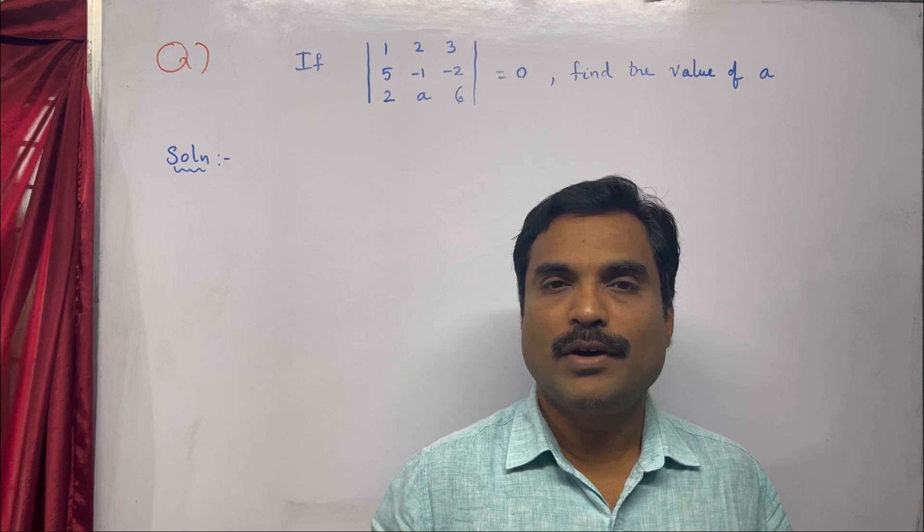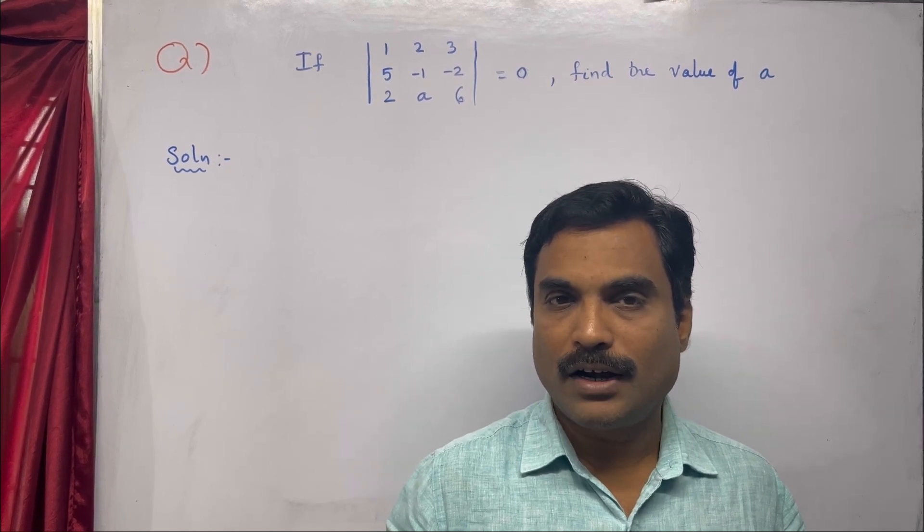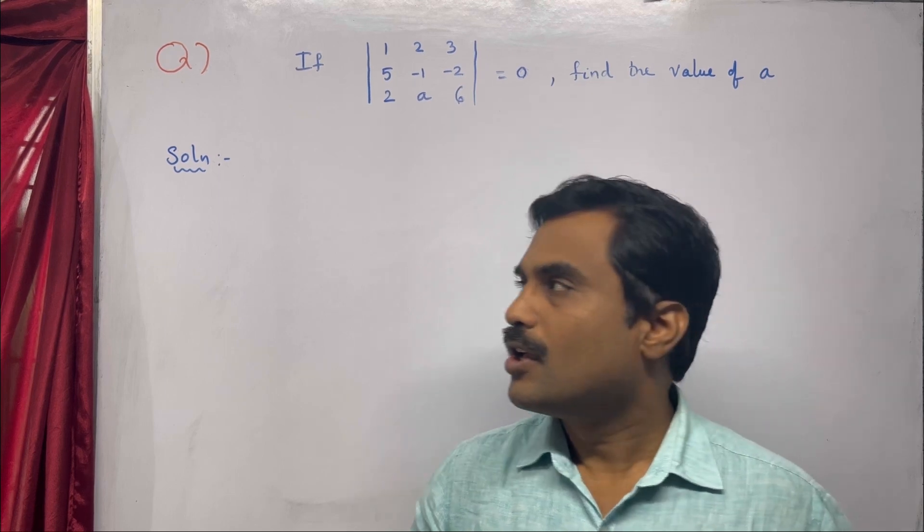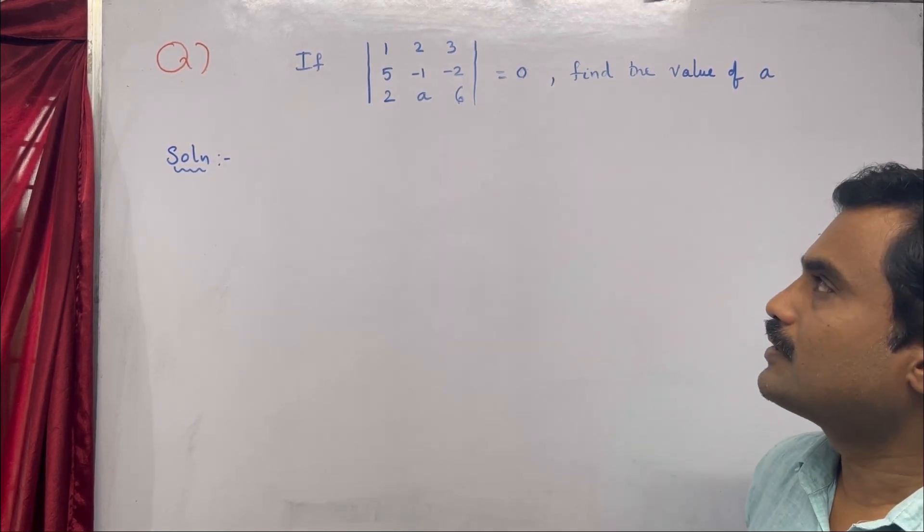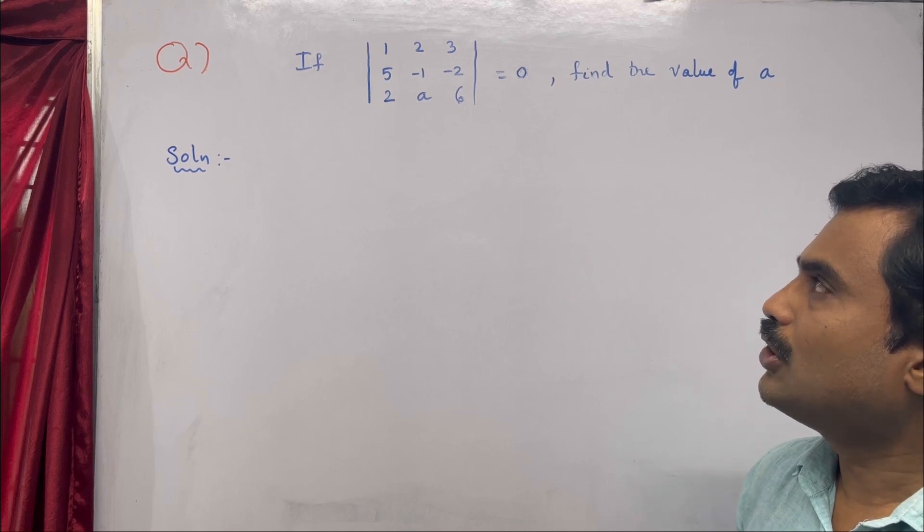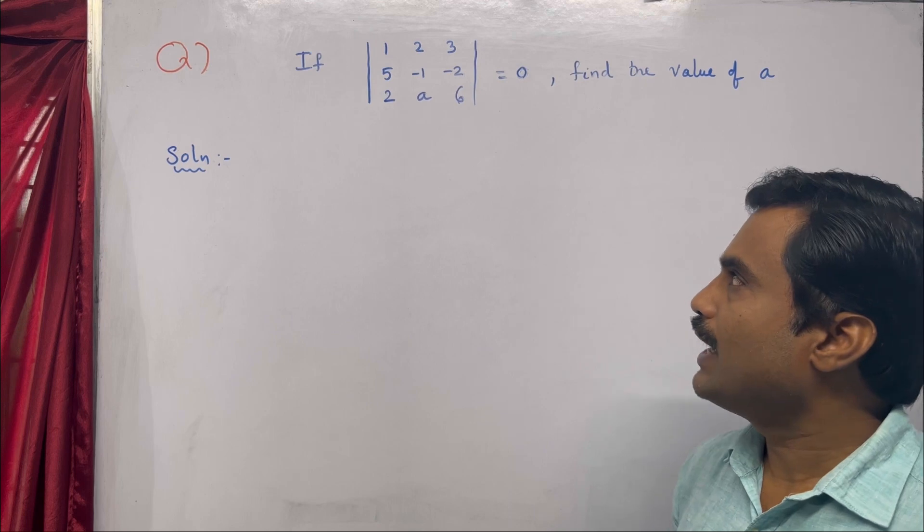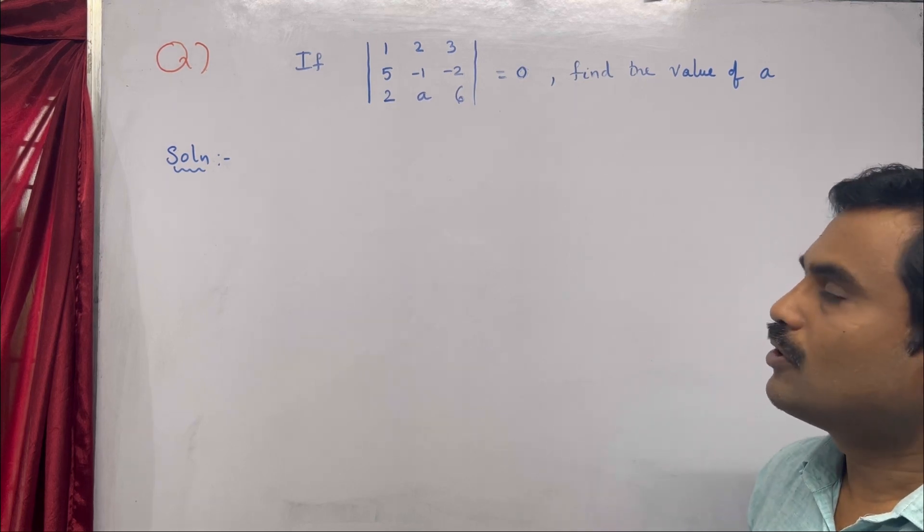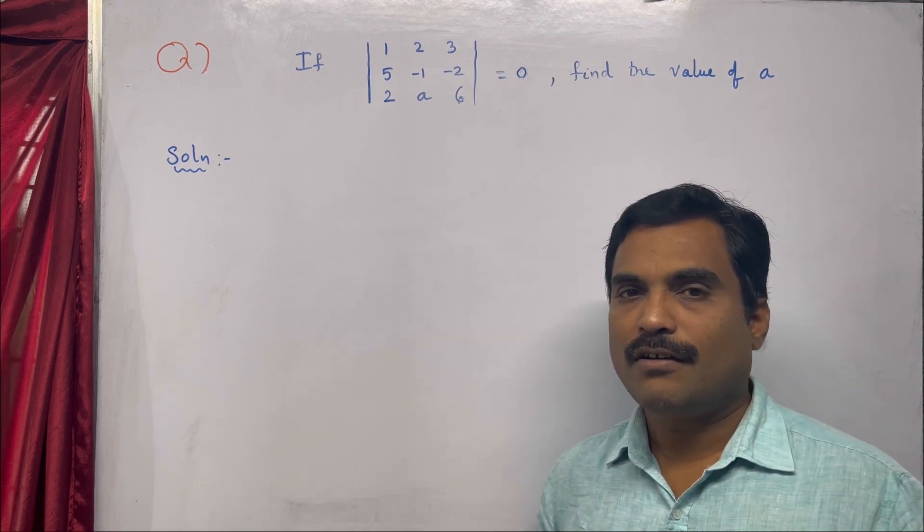Hi dear friends, welcome to my channel. In this video, I will solve a mathematical problem on determinants. The problem is: if a 3x3 determinant with first row 1, 2, 3, second row 5, -1, -2, and third row 2, a, 6 equals zero, find the value of a.